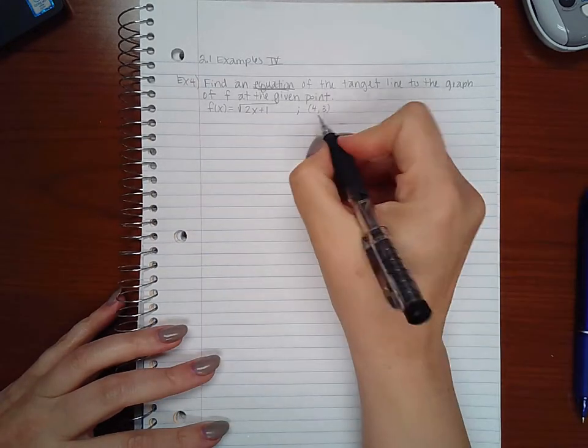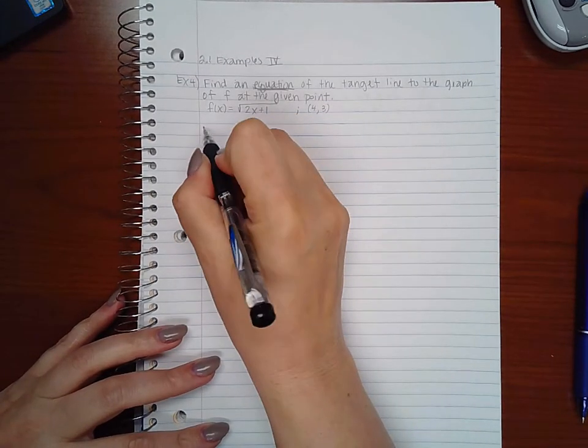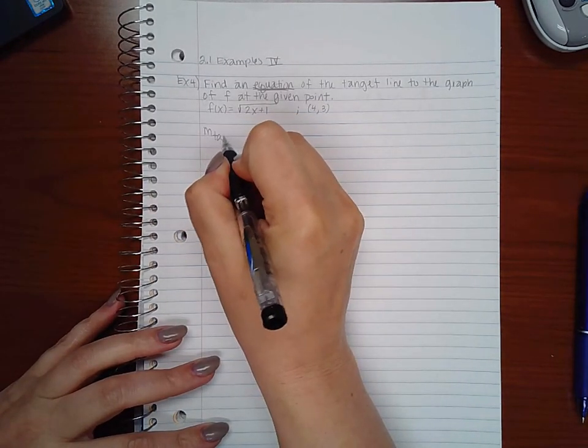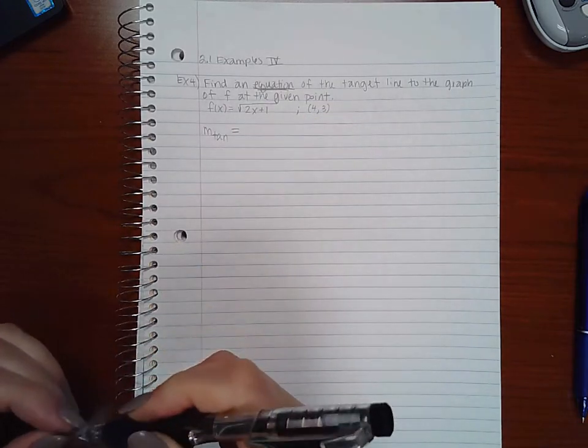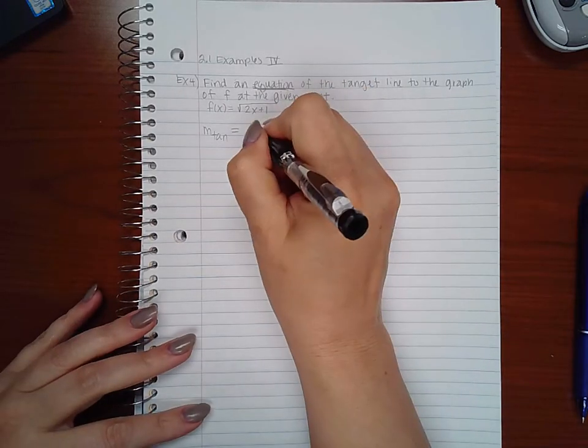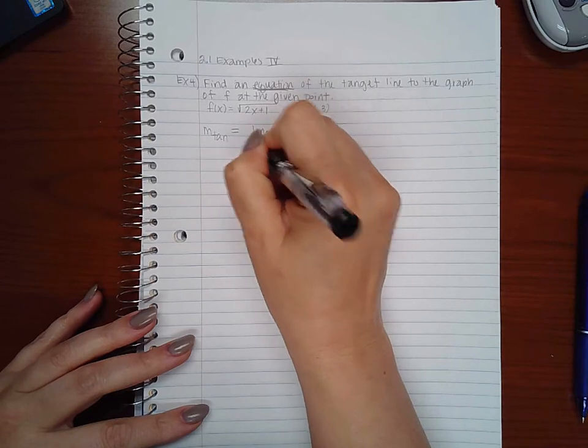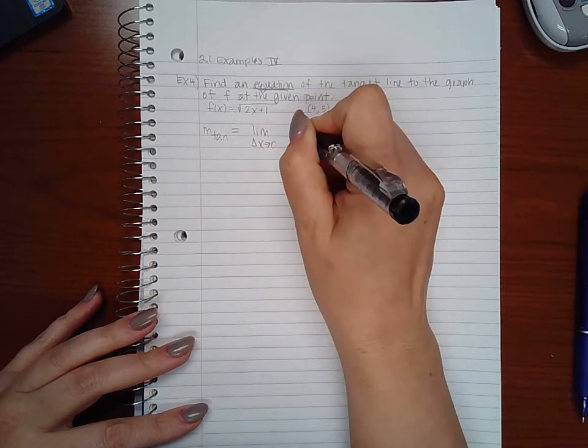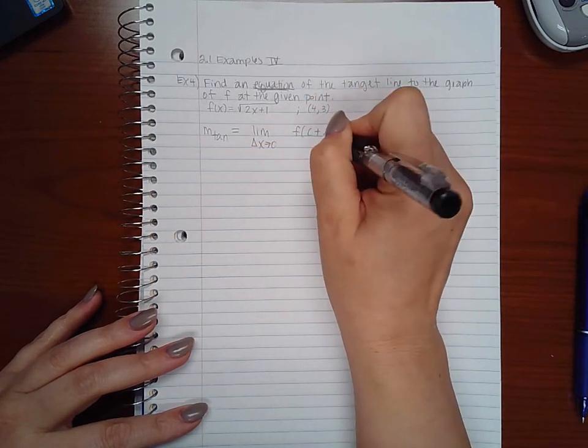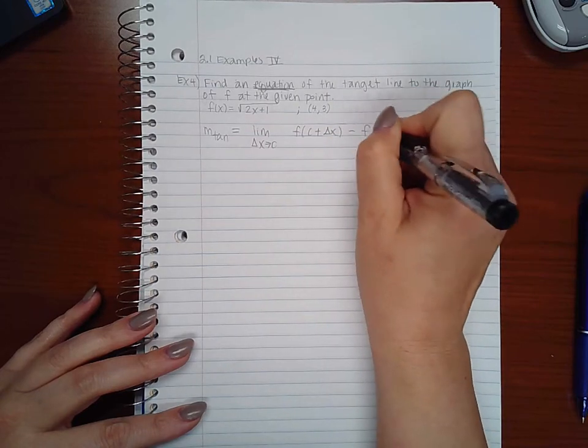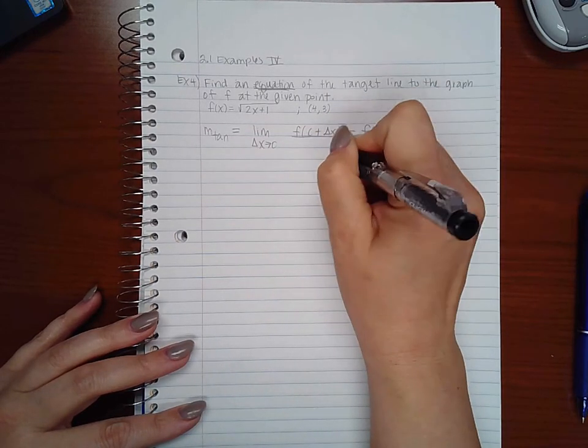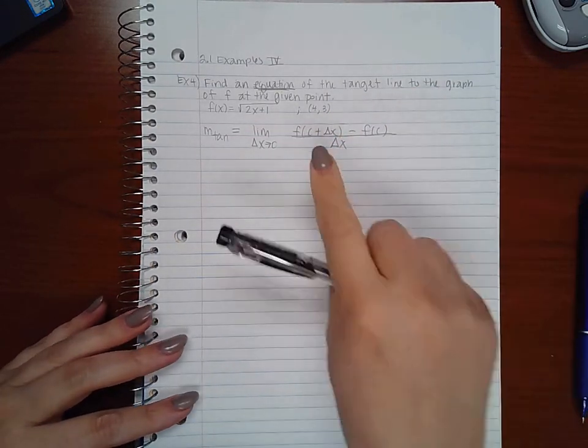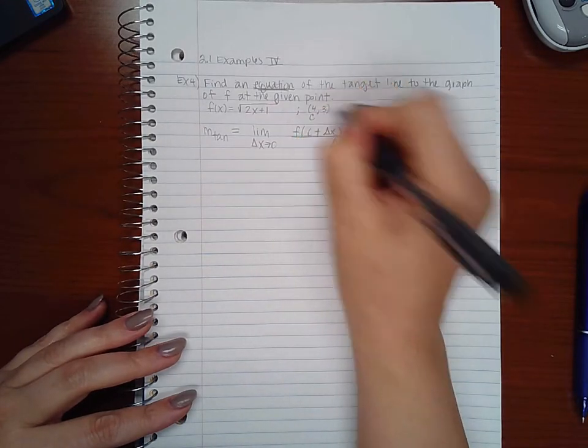The definition is the limit as delta x goes to zero of f of c plus delta x minus f of c over delta x. Now I do know what c is - the x value I'm talking about is four.